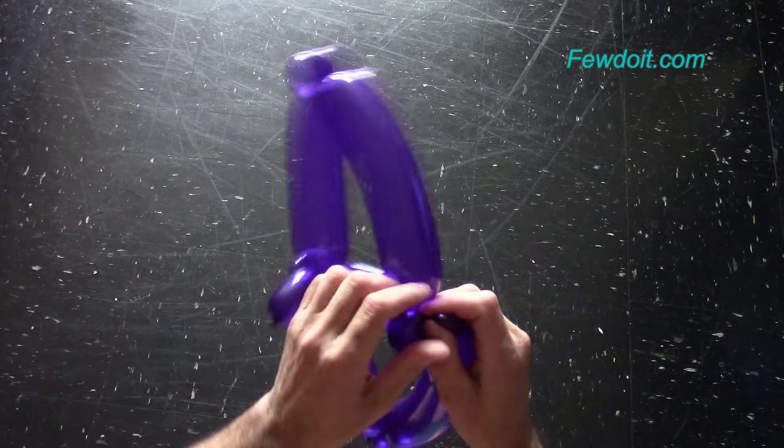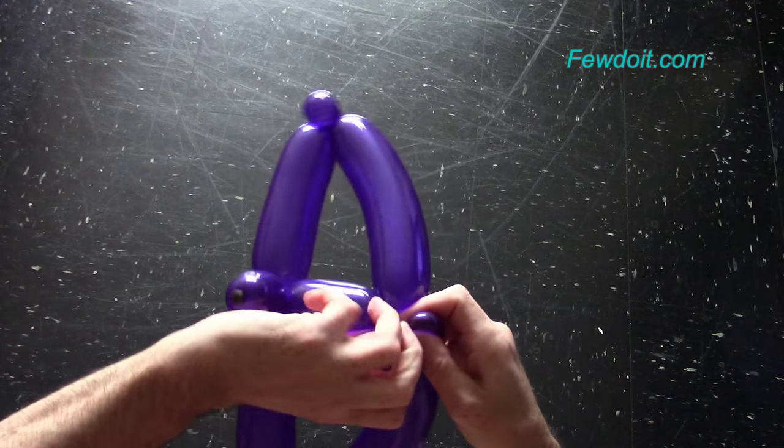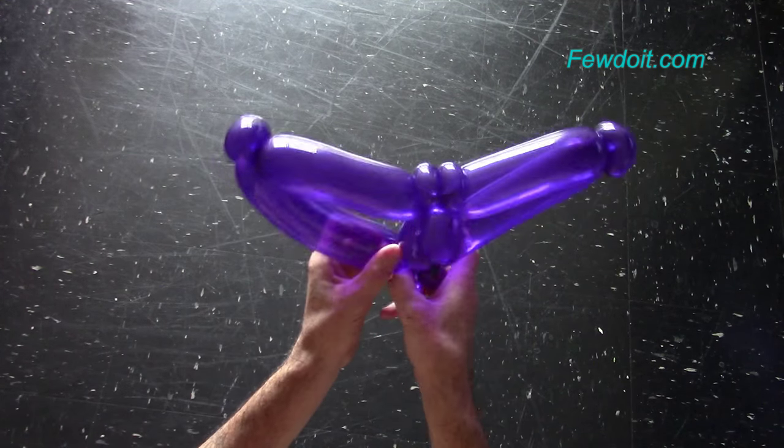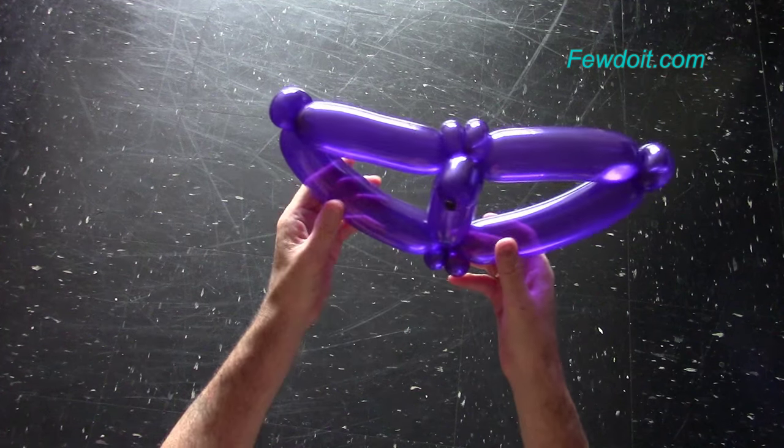Here I untwisted bubbles accidentally. Now I have to twist them again. Alright, basically we already made the bat. Now let's just fix all bubbles in proper positions.